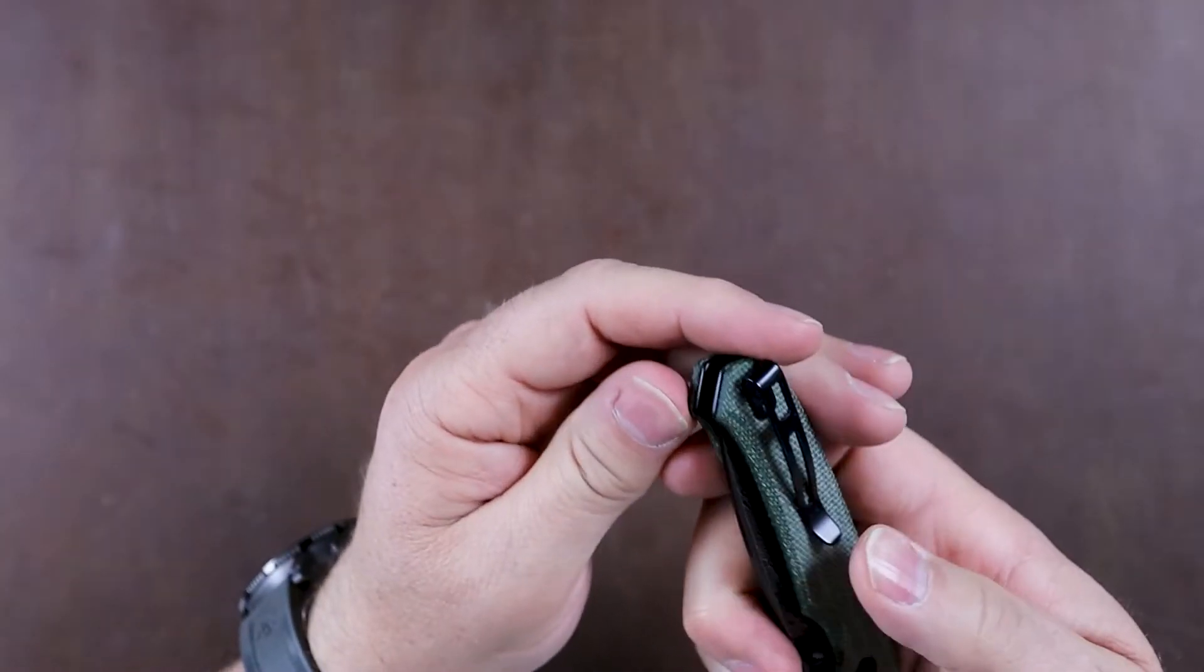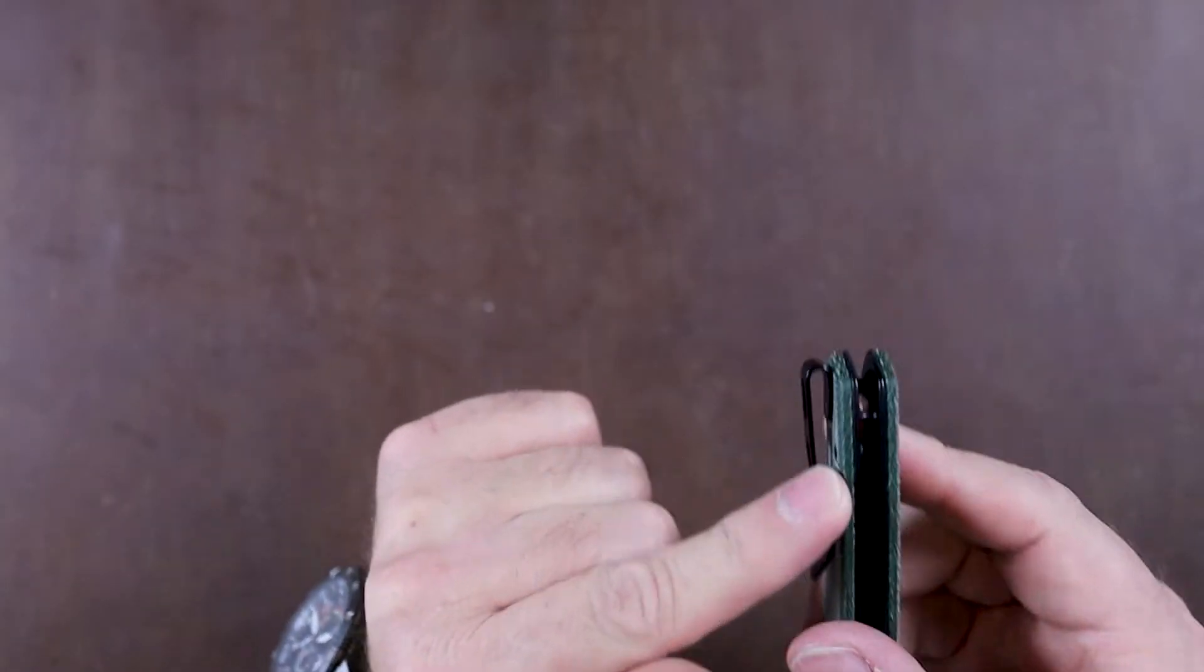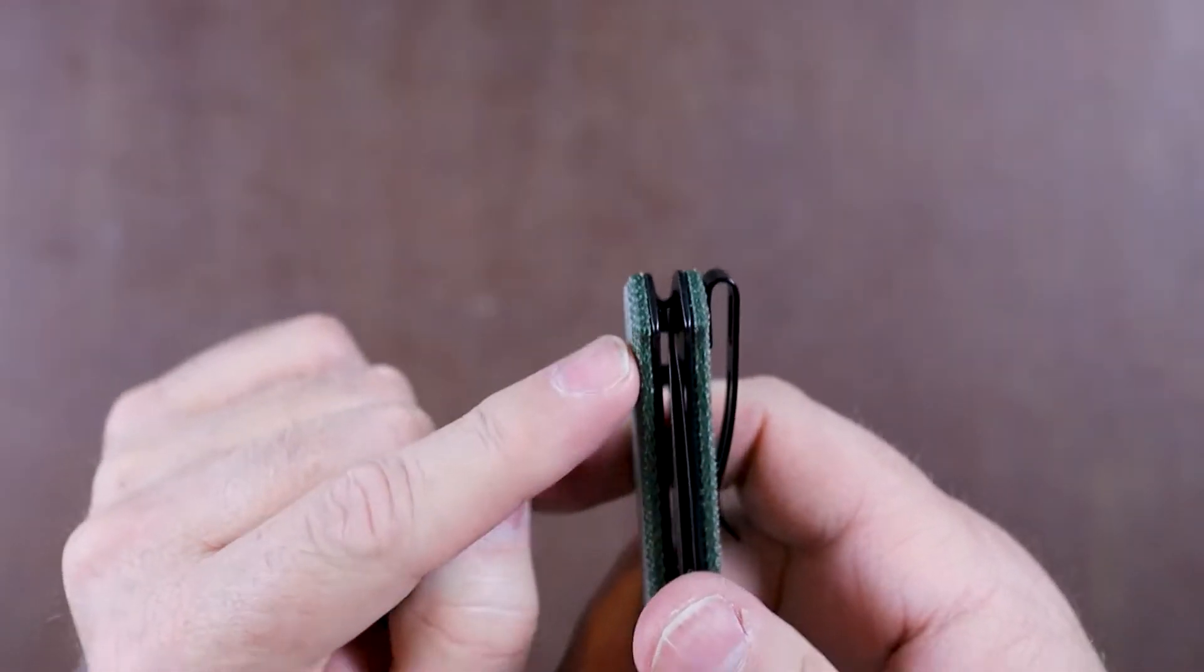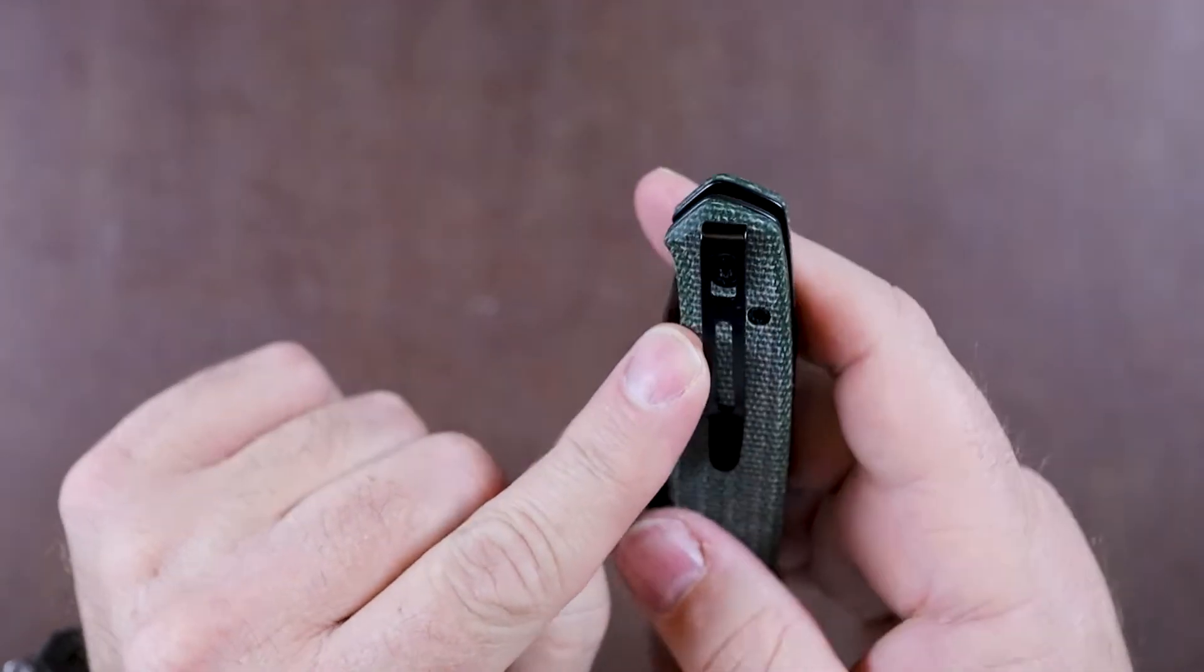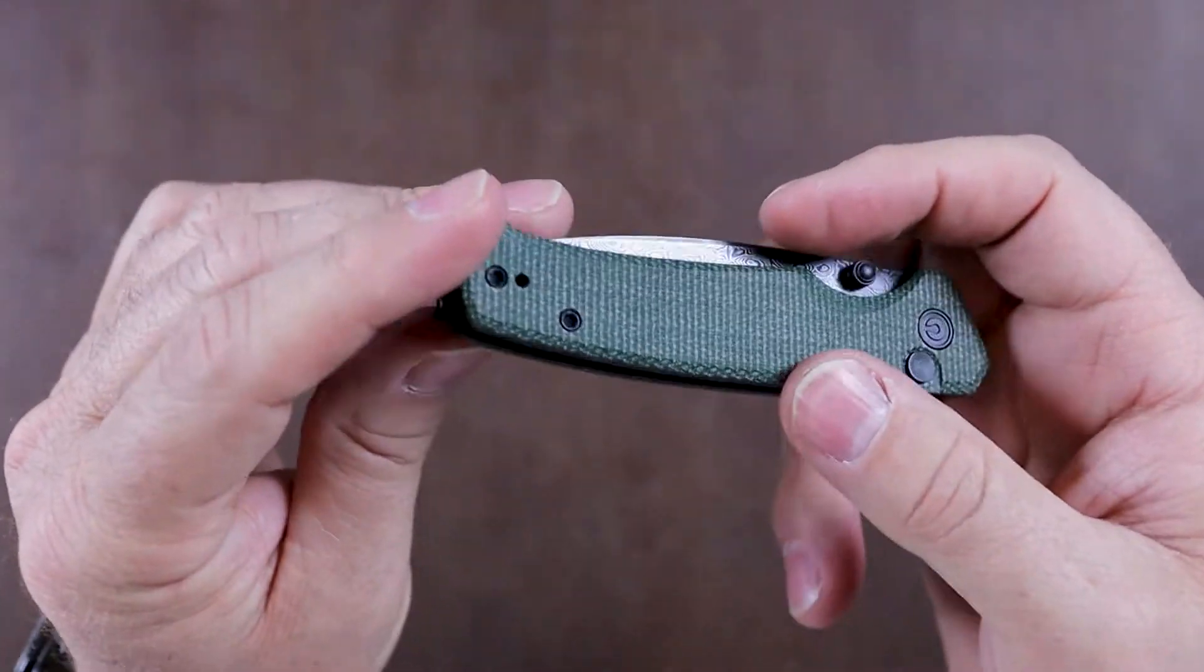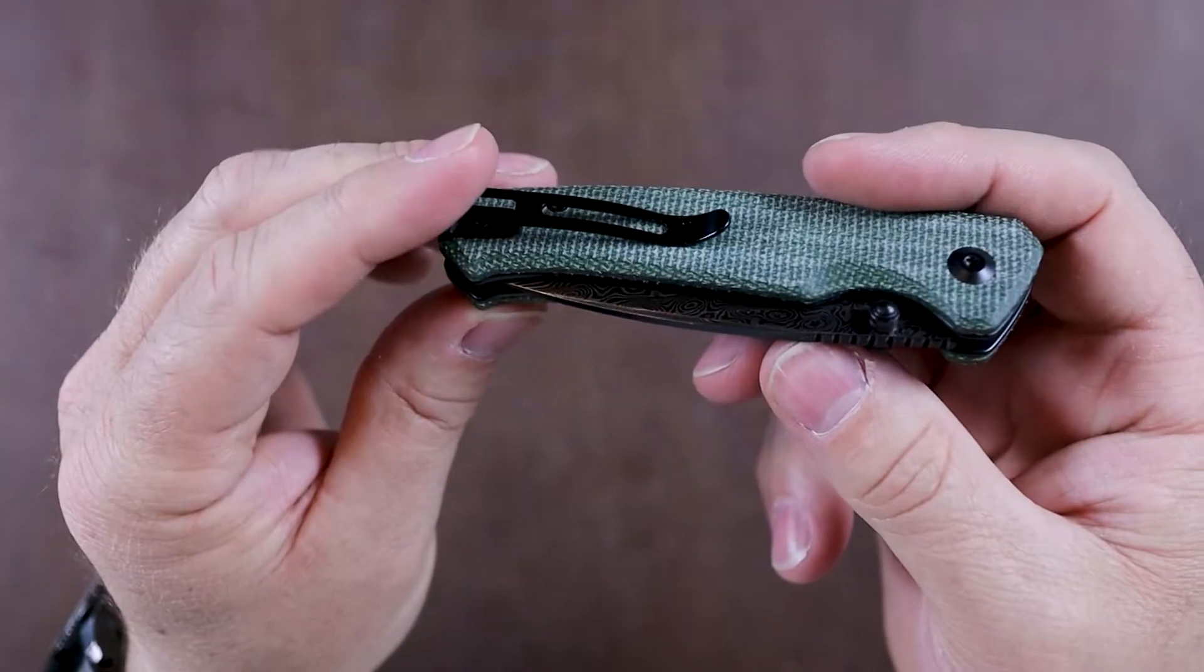The clip seems pretty strong. I do notice again that the clip is mounted on top of the scales, which is really not my favorite thing. It just doesn't look as good as if it was recessed. Whether that's actually going to get in the way when you're putting it in your pocket or not, I don't know. But I do notice that.